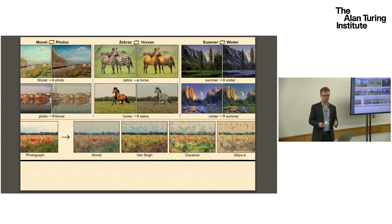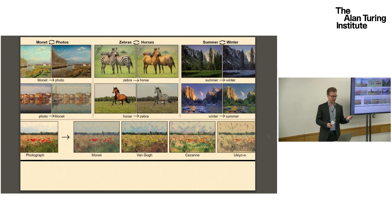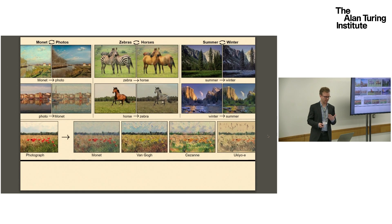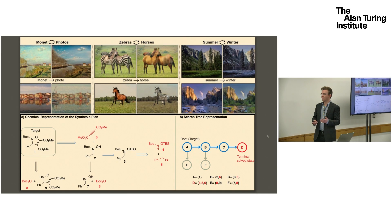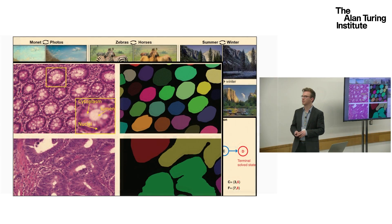We also have computer vision models that can transform images to other images, doing very interesting transformations such as replacing zebras by horses, turning summer into winter, or turning a drawing of Monet into something more photorealistic, or given a photograph, generating images that look like they've been painted by Monet or Van Gogh. There are also more practical applications — for instance, Marvin Ziegler has been working on using deep reinforcement learning to synthesize chemicals, which I find extremely exciting. We now have computer vision models that are better than humans at classifying tumor cancer cells in images.